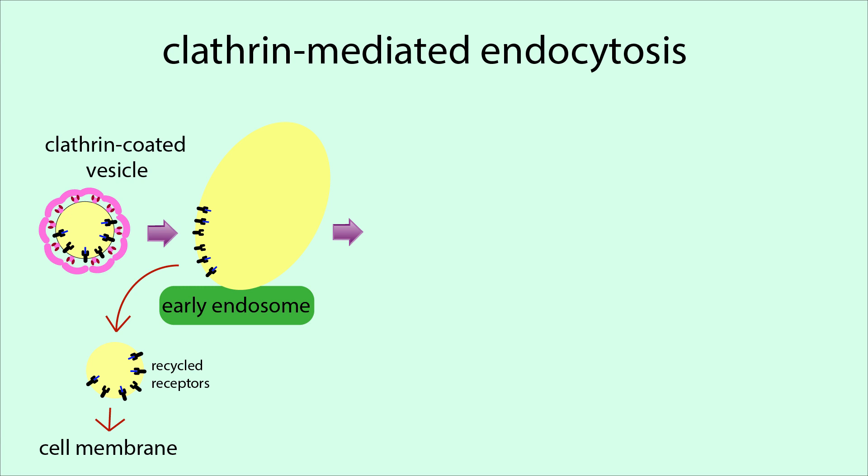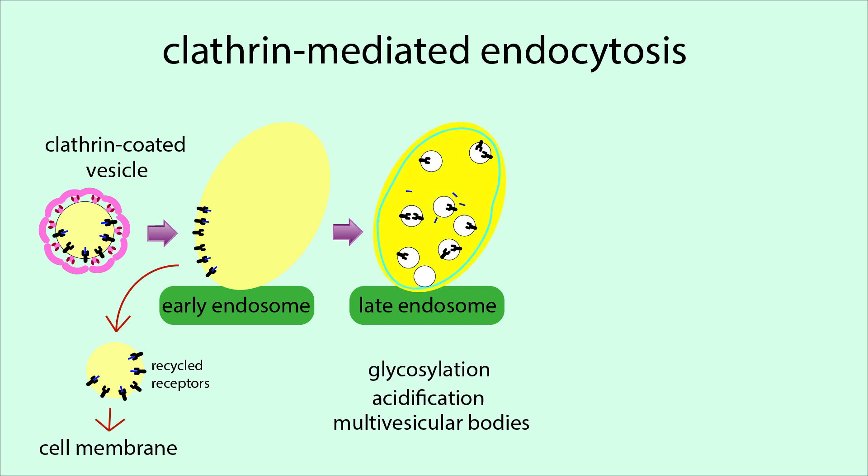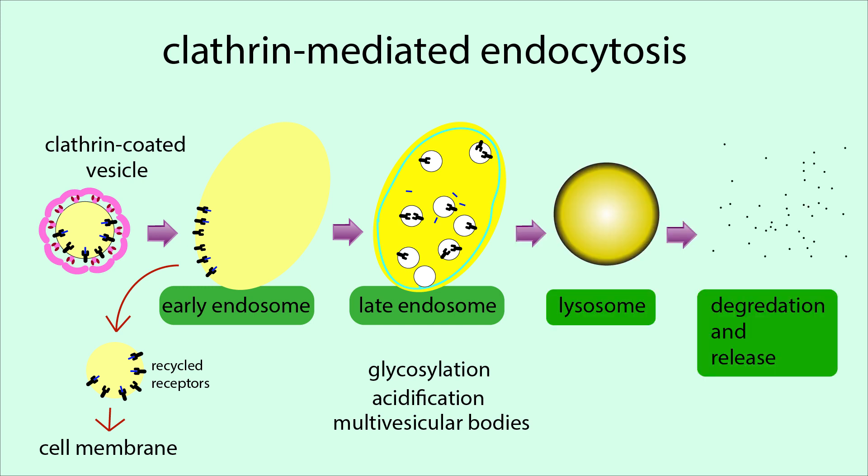Ligands and receptors to be degraded remain in the early endosome, which matures into the late endosome with the formation of multivesicular bodies, glycosylation, and acidification. Late endosomes then fuse with lysosomes full of enzymes that degrade everything inside the endosome.